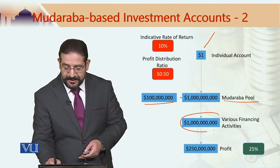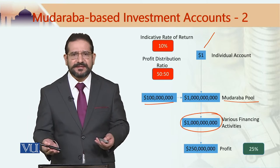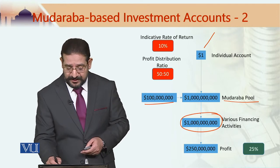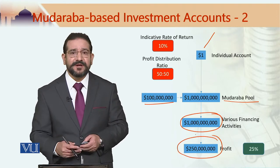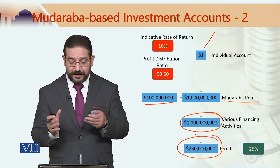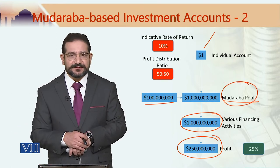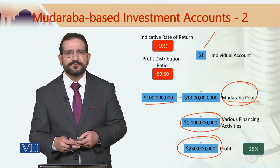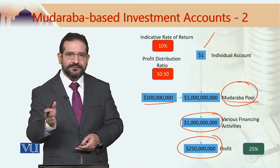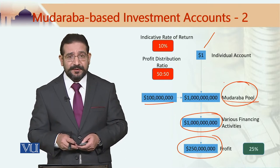This one billion dollar amount is used for various financing activities undertaken by the bank. If there is a profit — say in this case 250 million dollars — that is the profit generated by the Mudaraba pool, which is equivalent to 25 percent. This profit is for all those who have contributed to the Mudaraba pool: both the unrestricted profit sharing investment account holders as well as the shareholders of the bank.